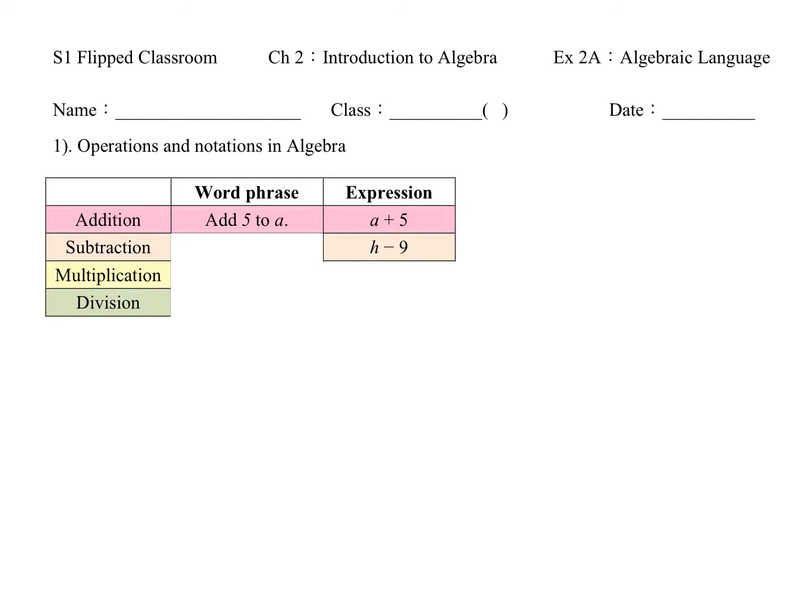Next is h minus 9, which is subtraction. Subtraction is something minus anything. In word phrase, we can say subtract 9 from h. Next, multiplication. What is multiplication? That is two numbers times together. We say multiplication, or we can say multiply 12 by x. That is 12x.